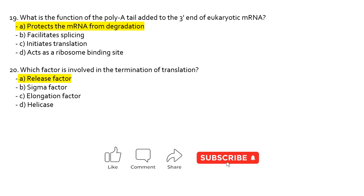What is the function of the poly-A tail added to the three prime end of eukaryotic mRNA? It protects the mRNA from degradation. Which factor is involved in the termination of translation? The release factor is involved in termination. Elongation factors are for the elongation process, helicase is for unwinding DNA, and sigma factor is important in initiation — so the answer is the release factor.